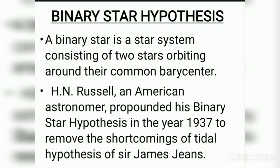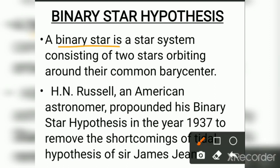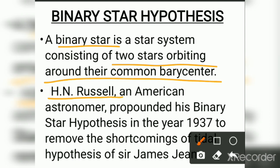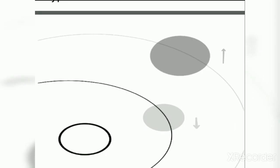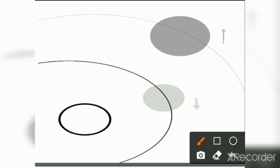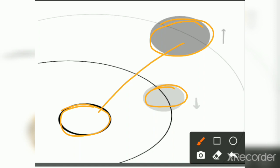The Binary Star Hypothesis: A binary star is a star system consisting of two stars orbiting around their common barycenter. H.N. Russell, an American astronomer, proposed his Binary Star Hypothesis in 1937. In this system, the primitive Sun had a companion star forming a binary star system, and there was also a giant approaching star at a greater distance from the primitive Sun but close to the companion star.